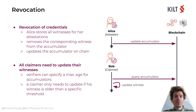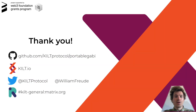And this already wraps up the protocol. Thank you very much for your attention. The project I was talking about is called Portable Gabi, and of course it is open sourced and can be found on GitHub. It's a TypeScript API that uses the Substrate blockchain for the storage of accumulators. If you want to know more about it, or KILT in general, you can join our Riot channel or find us on Twitter — I put the links here on the slide. Stay healthy everyone, and thank you very much for listening. Goodbye.